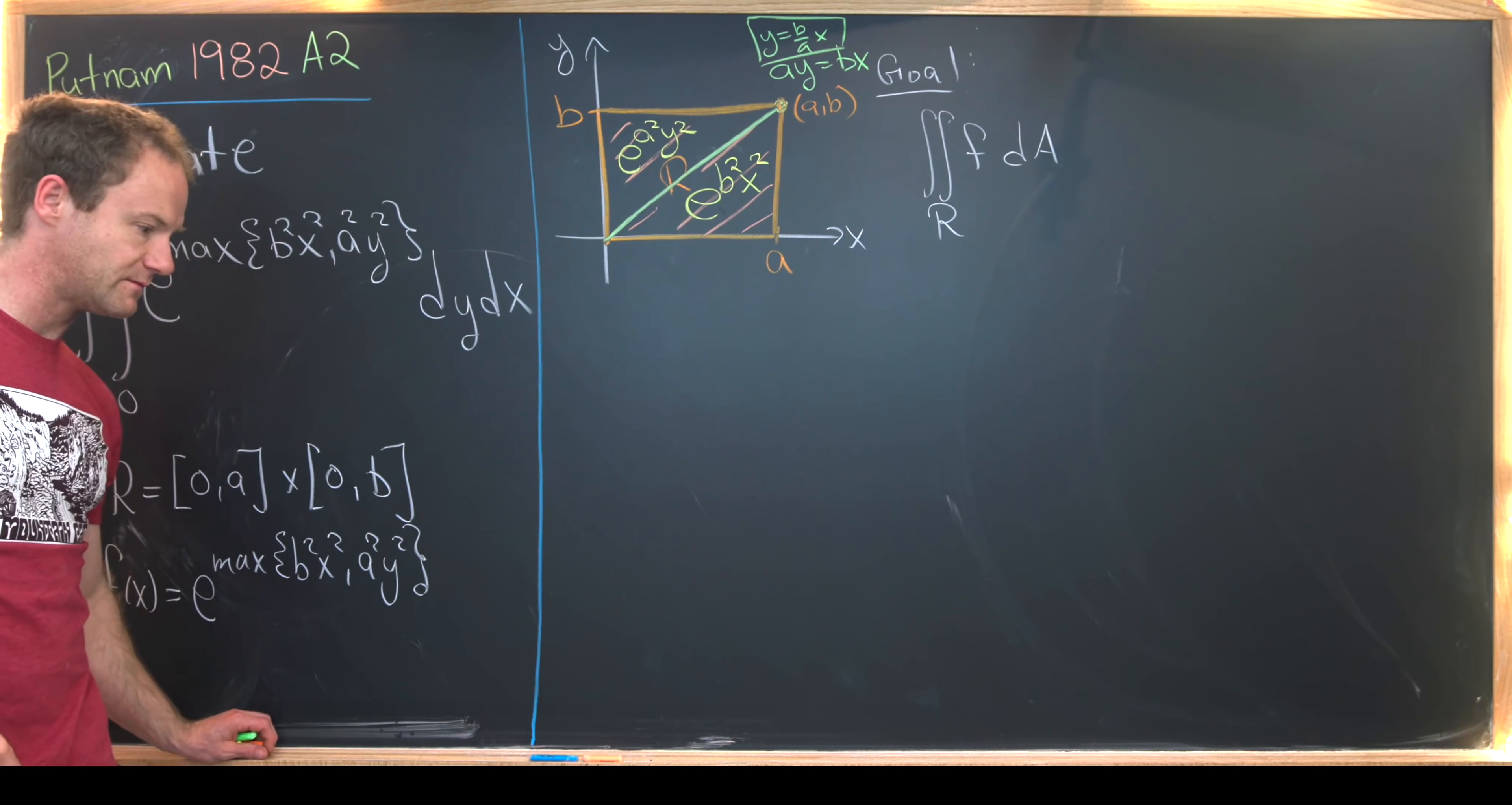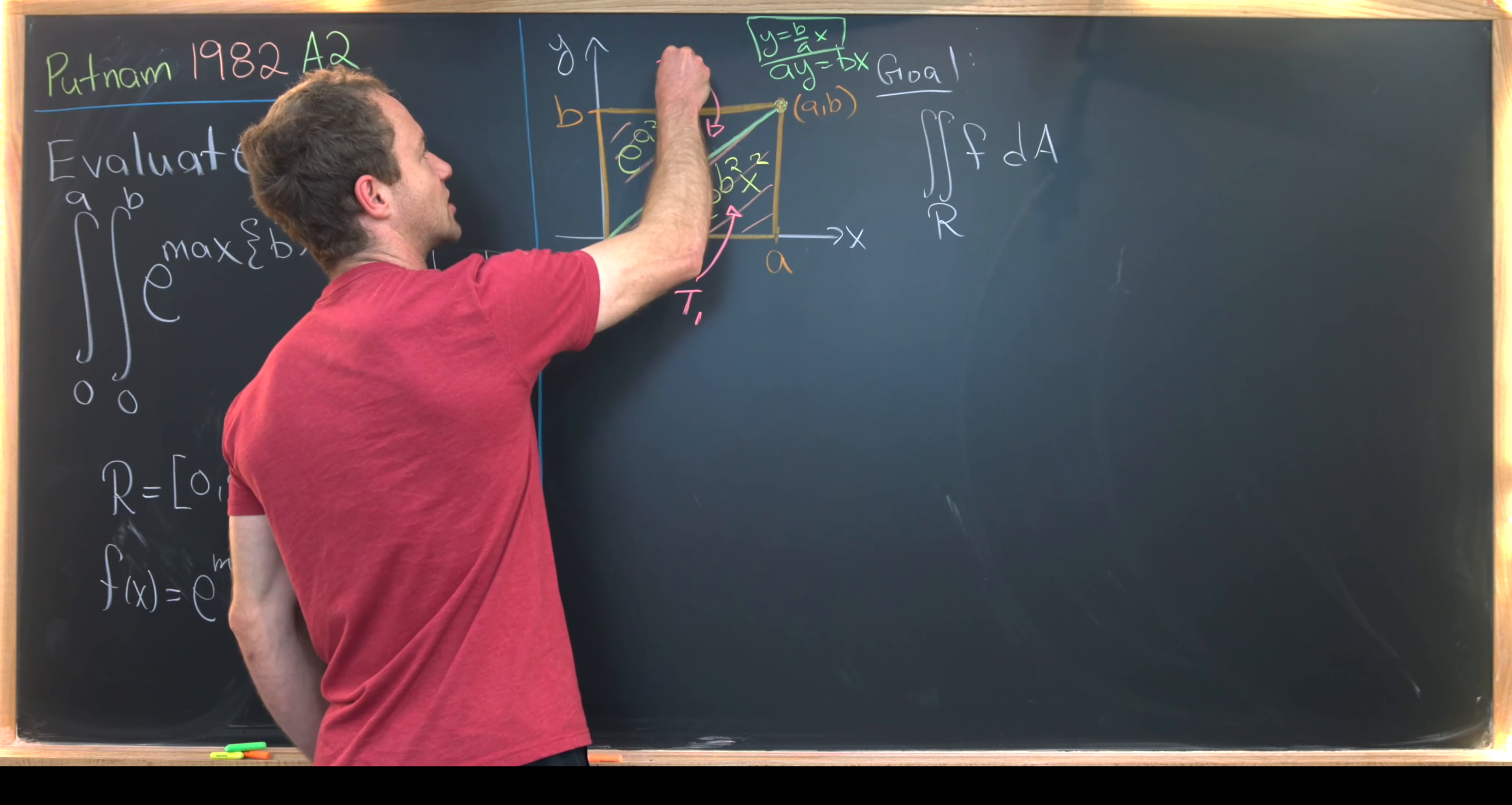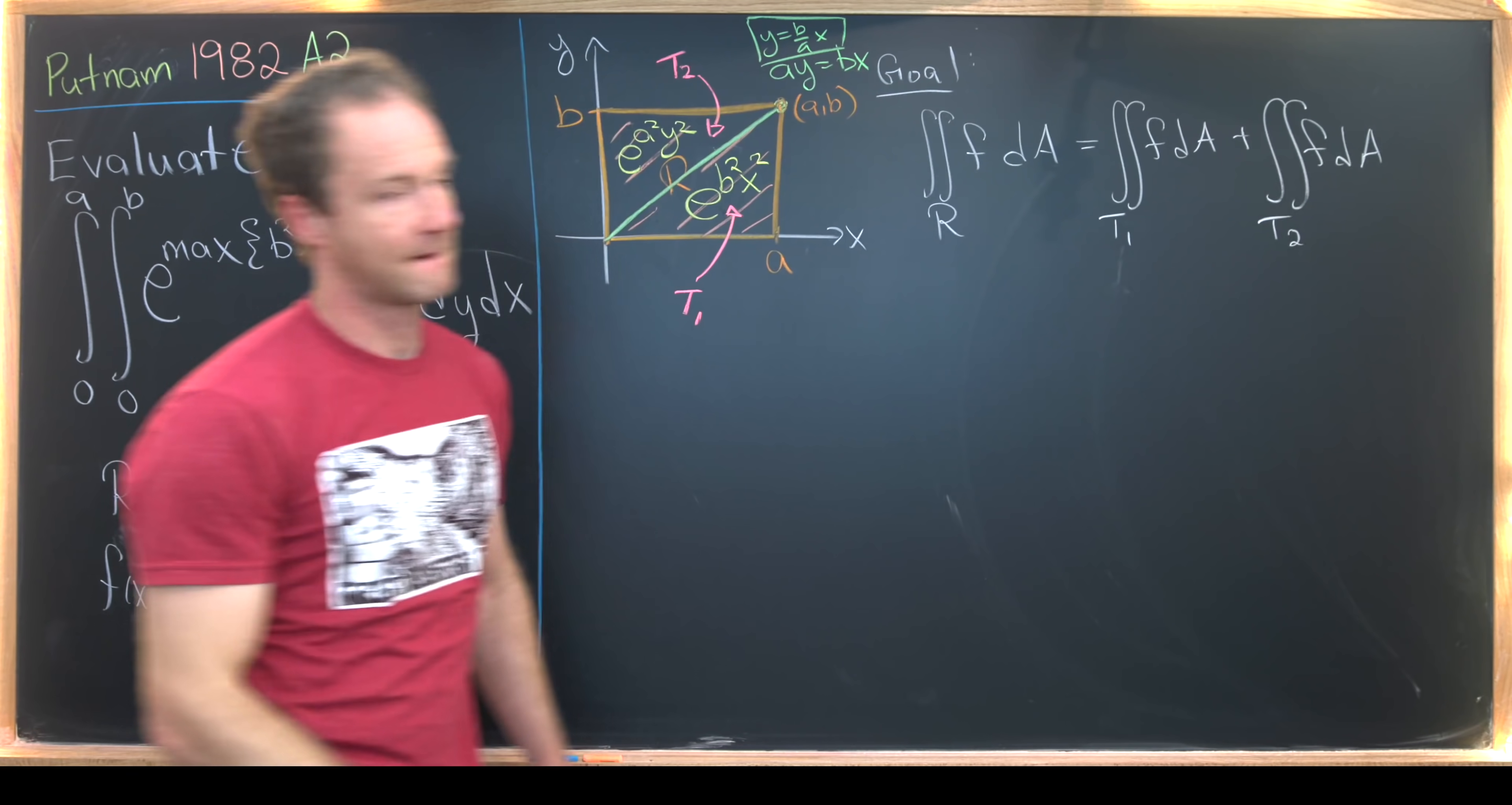Then furthermore, we might as well give some names to these two regions, where these two parts of the function kind of dominate. And I'll let those be triangle one and triangle two. So let's call this bit right here, maybe triangle one, then we'll call this bit right here, triangle two, like that. Now we can take this and rewrite it as the integral over triangle one of F dA plus the integral over triangle two of F dA. Okay, nice.